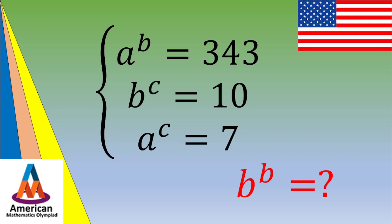Hello and welcome. In this video, we solve an exercise given during the Junior American Math Olympiad. The exercise gives a system of three equations: a^b = 343, b^c = 10, and a^c = 7. You need to evaluate b^b. If you want to try, pause the video; otherwise, let's see a solution.